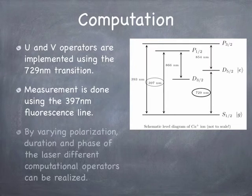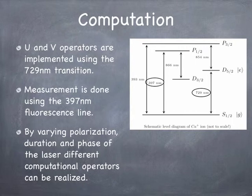The idea is that by varying the polarization, the duration, and the phase of the laser, different computational operators can be realized, such as the U and the V and the Hadamard and so on. Each of those can be thought of as a rotation of the state in the Bloch sphere. So we're basically using the laser to move the state vector around on the Bloch sphere, and those are equivalent to rotations and reflections and things like that.